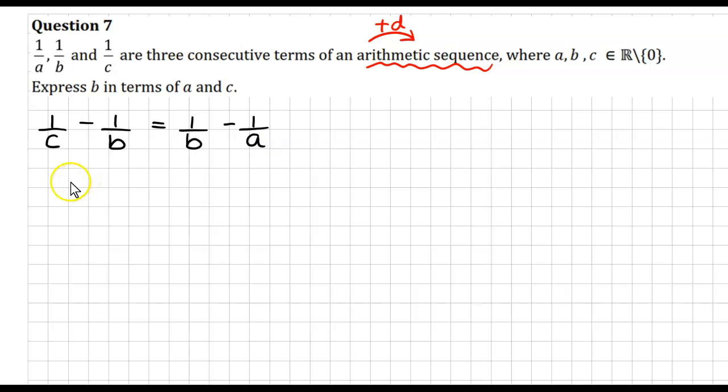Now, bringing all the b's together, -1/b - 1/b will be equal to -1/a - 1/c. And a quick sign change here will make everything positive and maybe a little bit easier to work with.